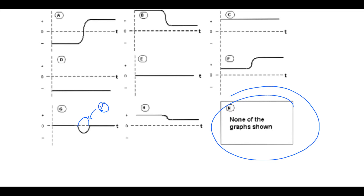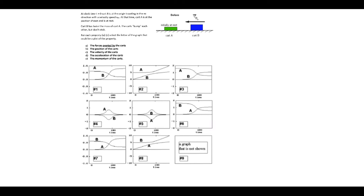So let's move on to some slightly more tricky ones. In this next problem, we've got cart B at the origin travelling in the positive direction with velocity VB zero, and cart A which is at rest at a more positive position than cart B. Cart B has twice the mass of A, and the carts bump but don't stick.